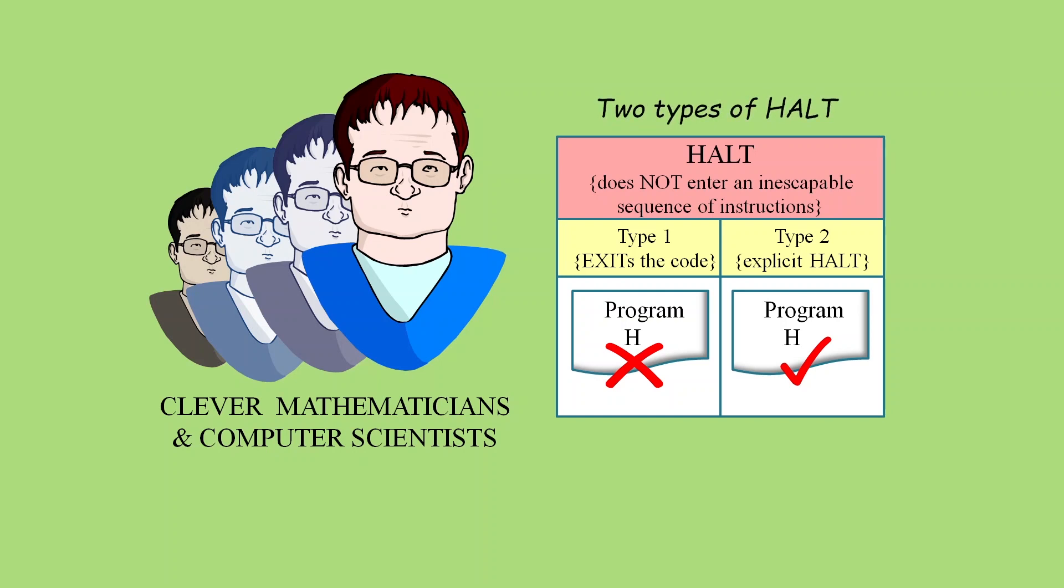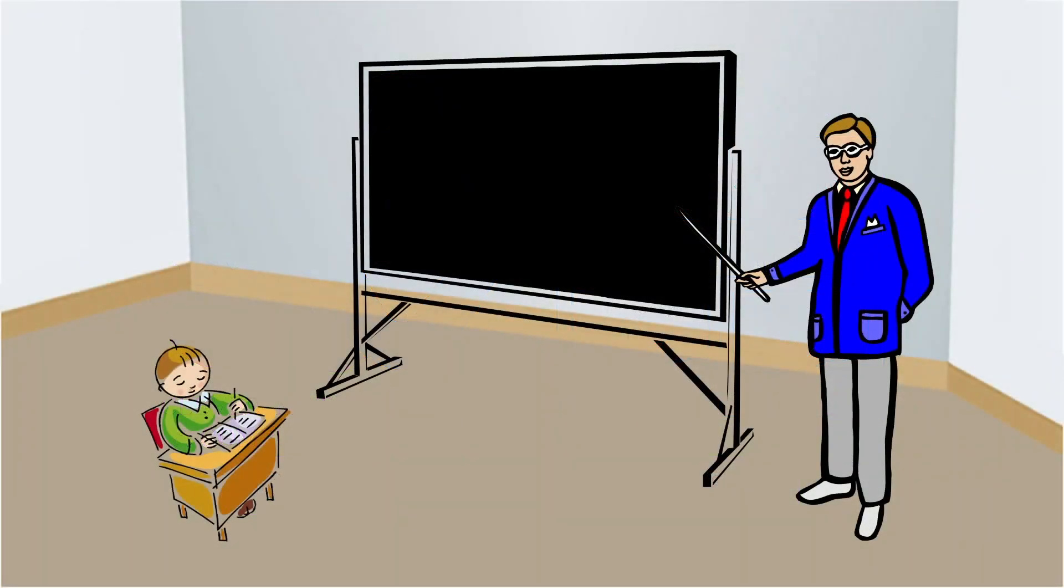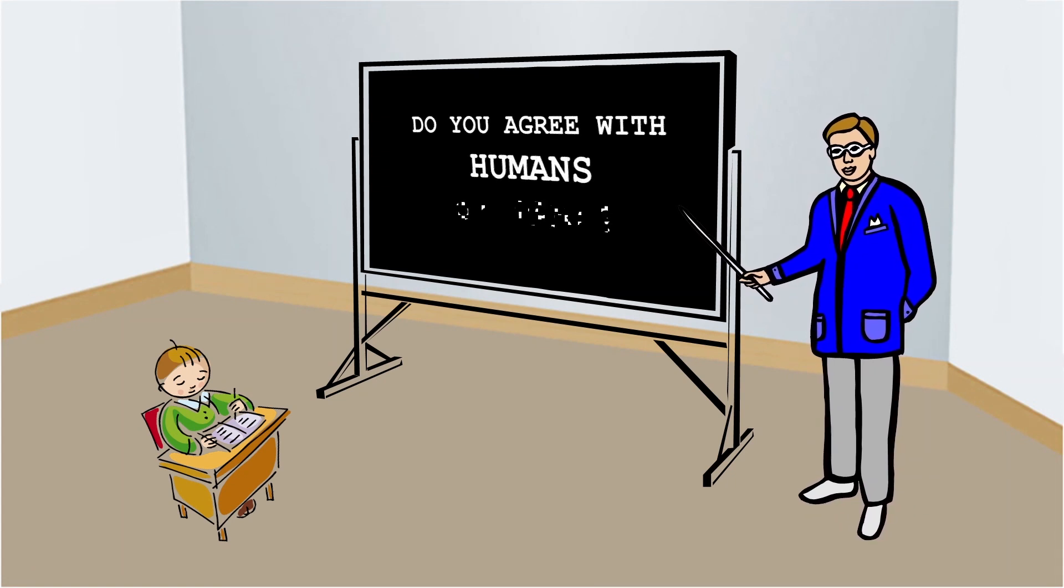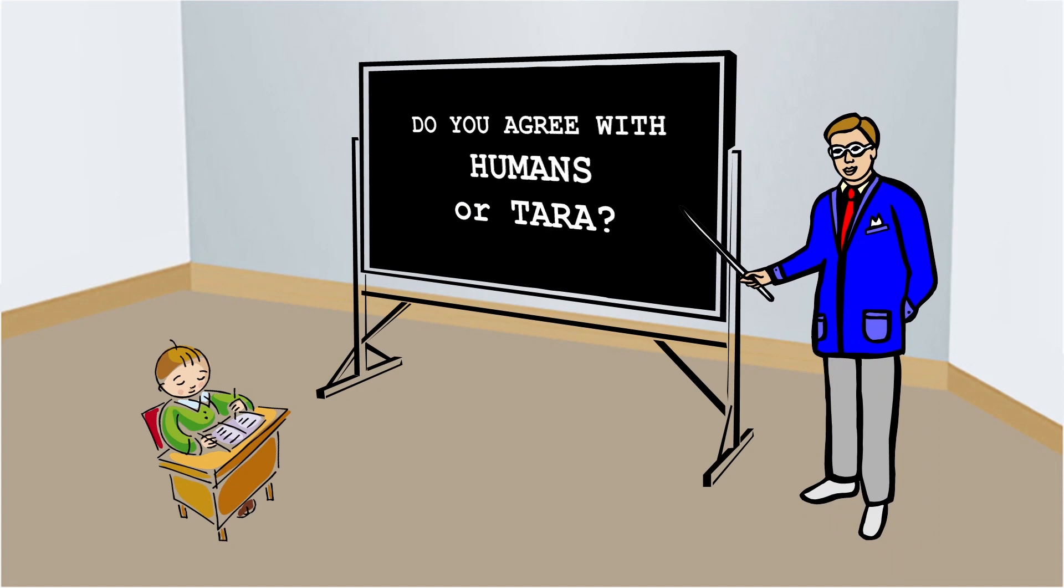And if a simple proof like this can be wrong, then we can't really have any confidence in the validity of any mathematical proof. And so, as a human yourself, do you agree with your fellow humans, or do you agree with Tara, the alien robot? The final decision is yours.